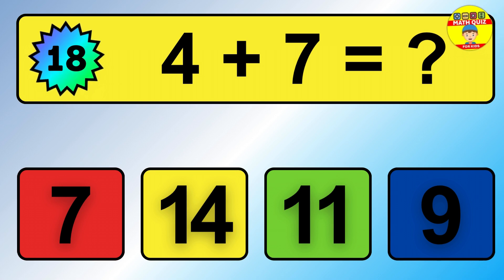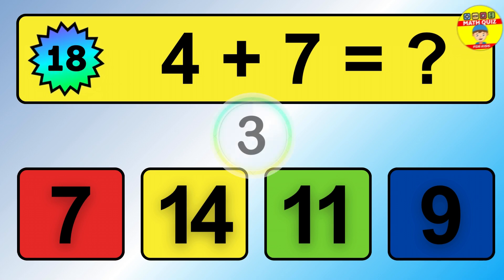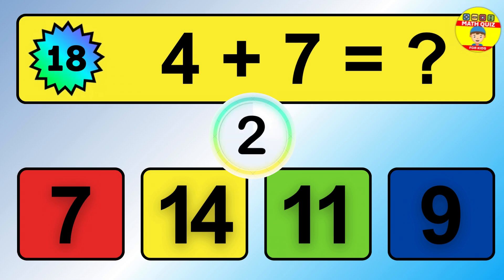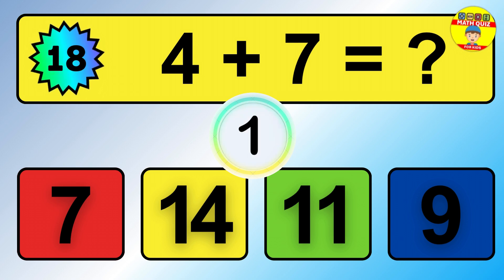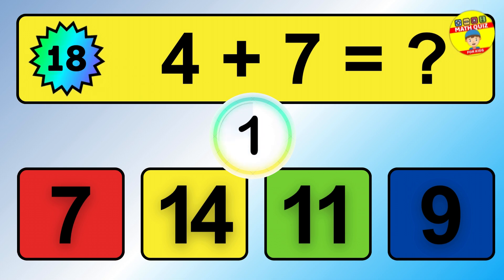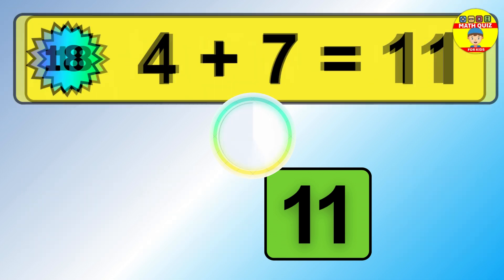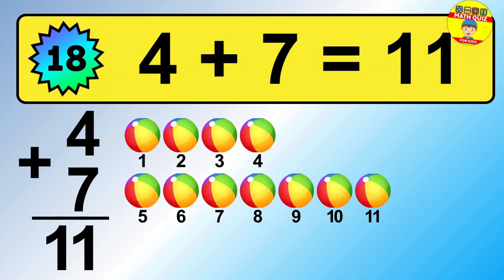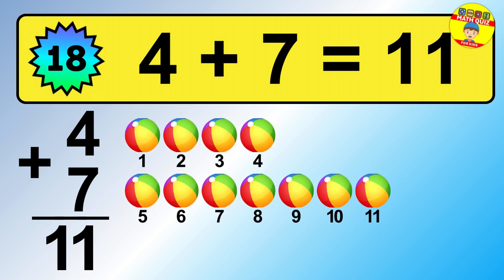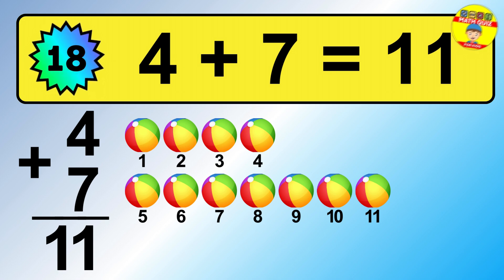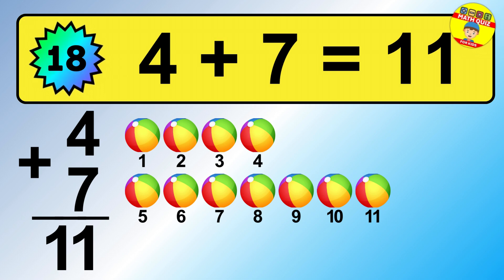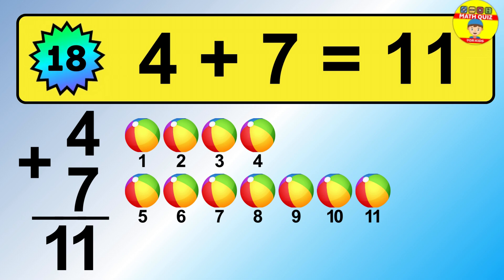Question 18. 4 plus 7 equals what? So the answer is 4 plus 7 is 11. Let's count it: 1, 2, 3, 4, 5, 6, 7, 8, 9, 10, 11.